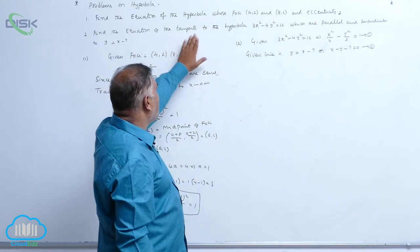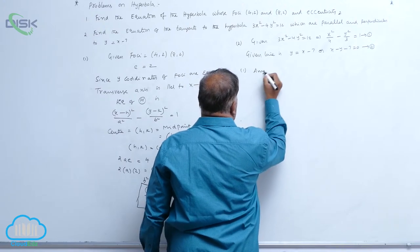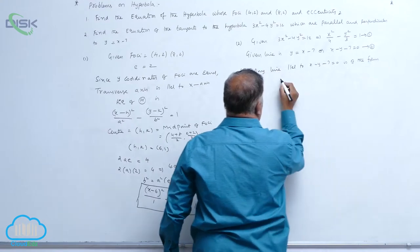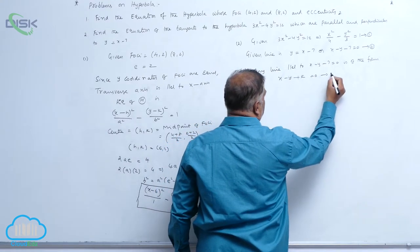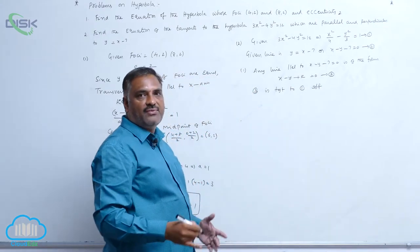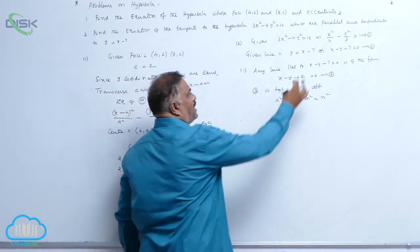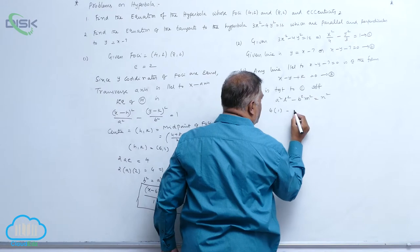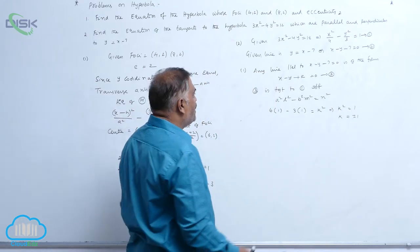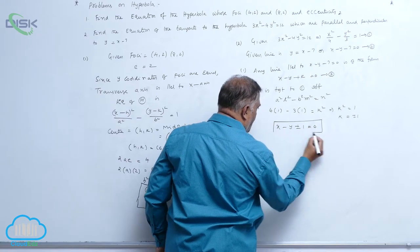We need to find the equation of the tangent to the hyperbola parallel and perpendicular to the given line. First case: any line parallel to x − y − 7 = 0 is of the form x − y + k = 0 — call it equation 3. Equation 3 is tangent to equation 1 if and only if the condition a²l² − b²m² = n² is satisfied. Here a² = 4, l² = 1, b² = 3, m² = 1, so 4(1) − 3(1) = k², giving k² = 1, hence k = ±1. Therefore the parallel tangent is x − y ± 1 = 0.